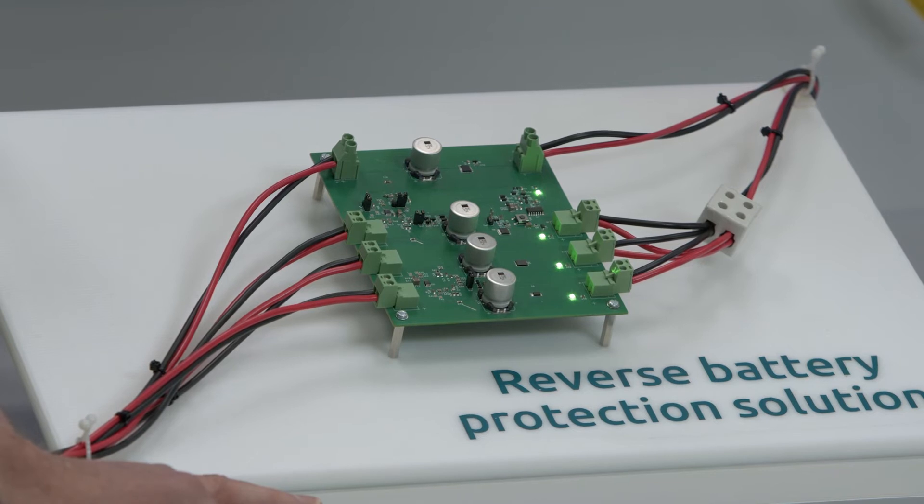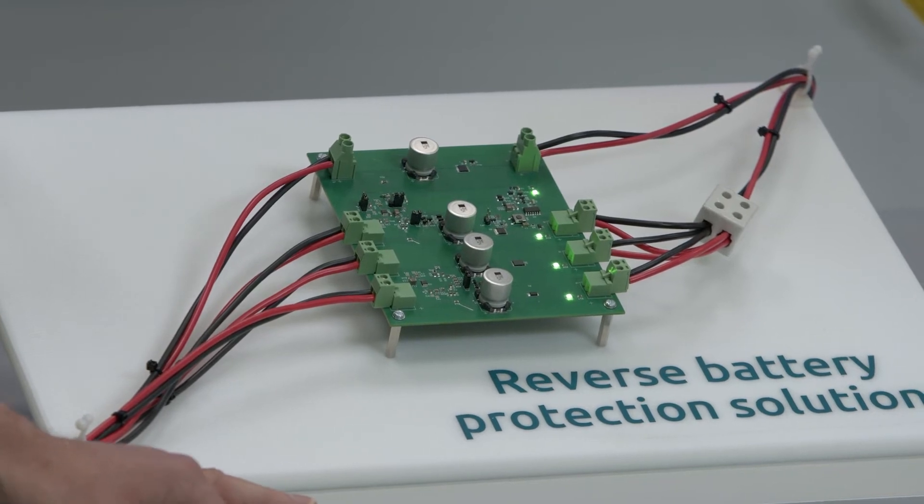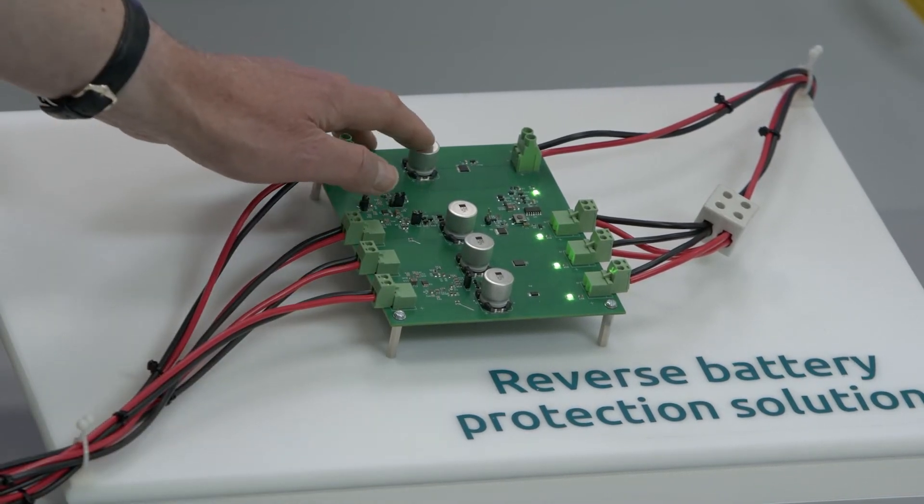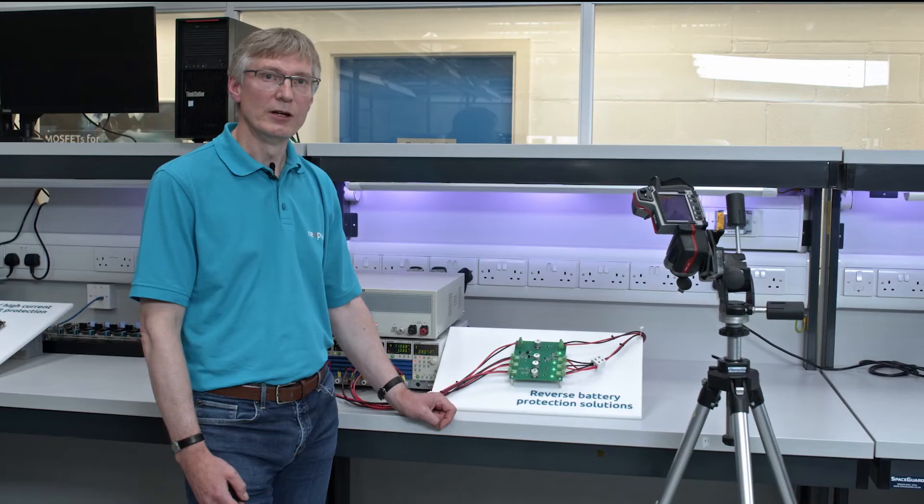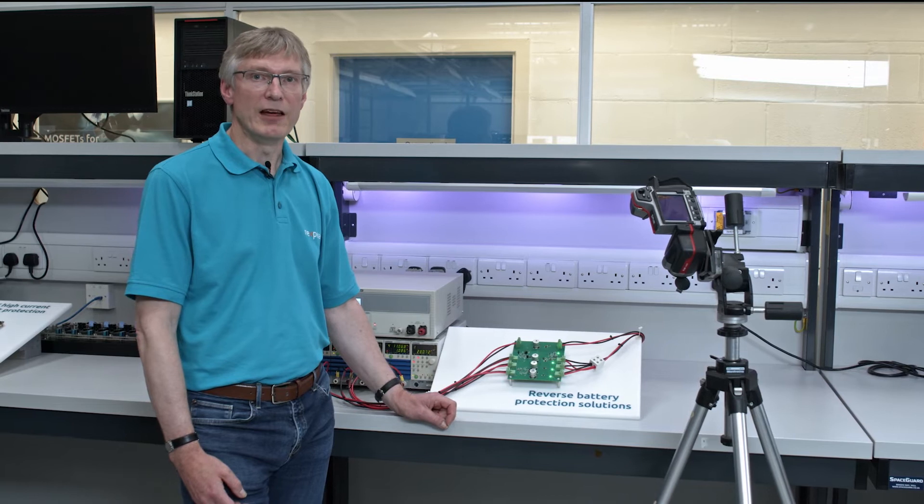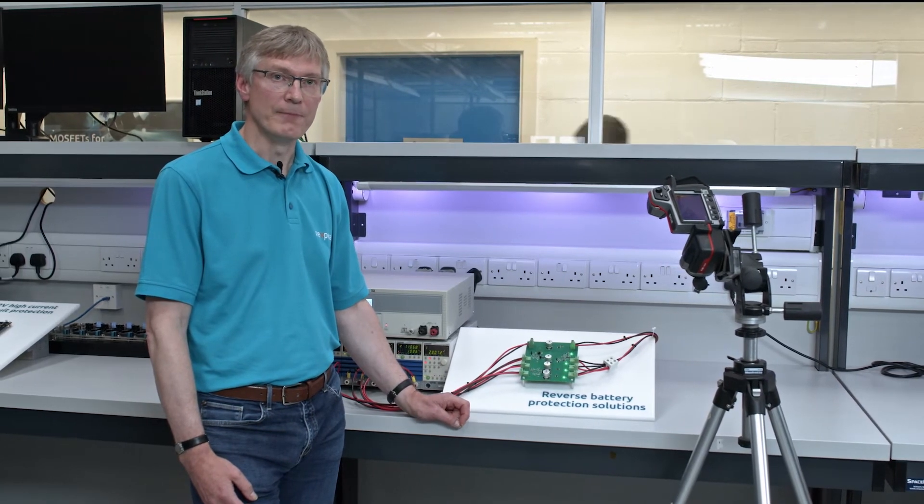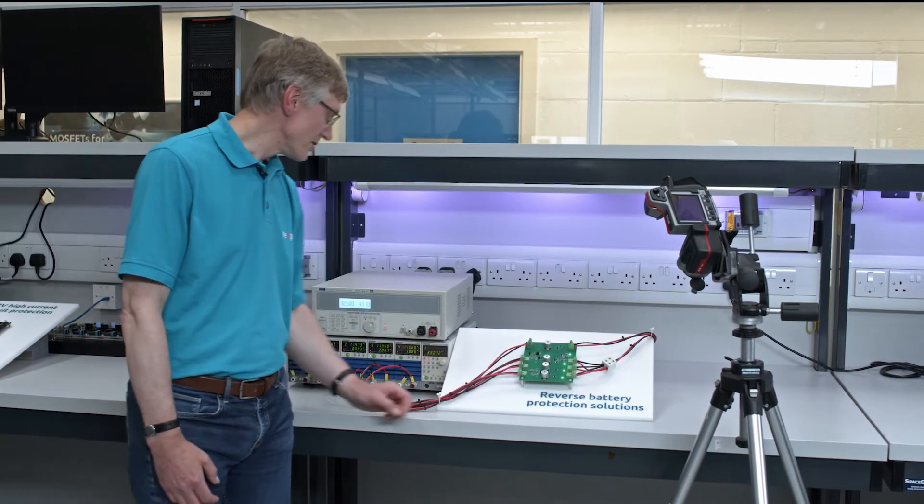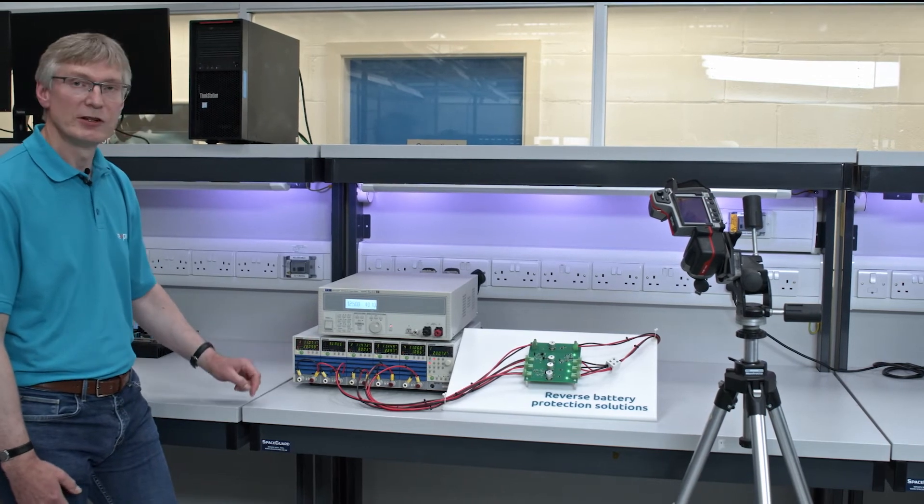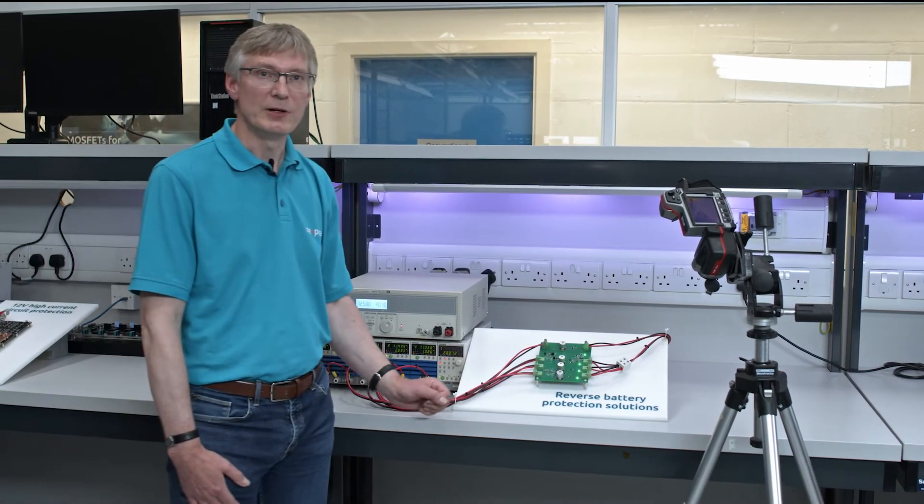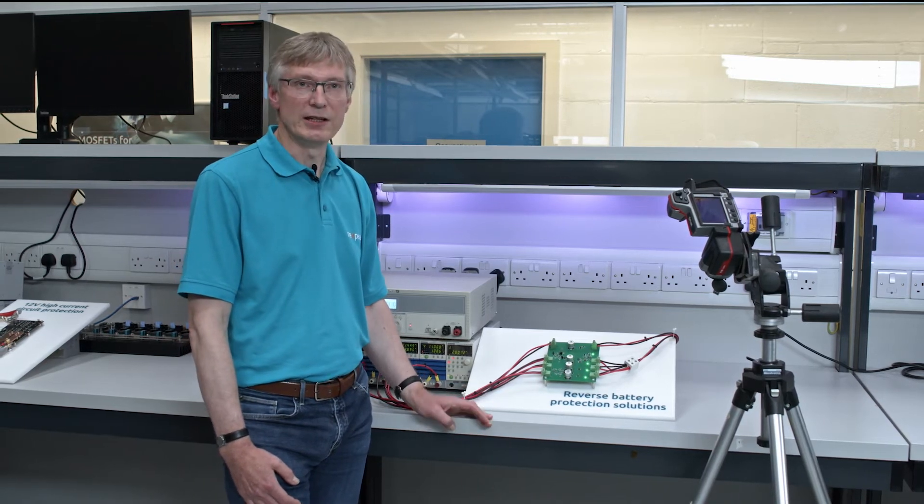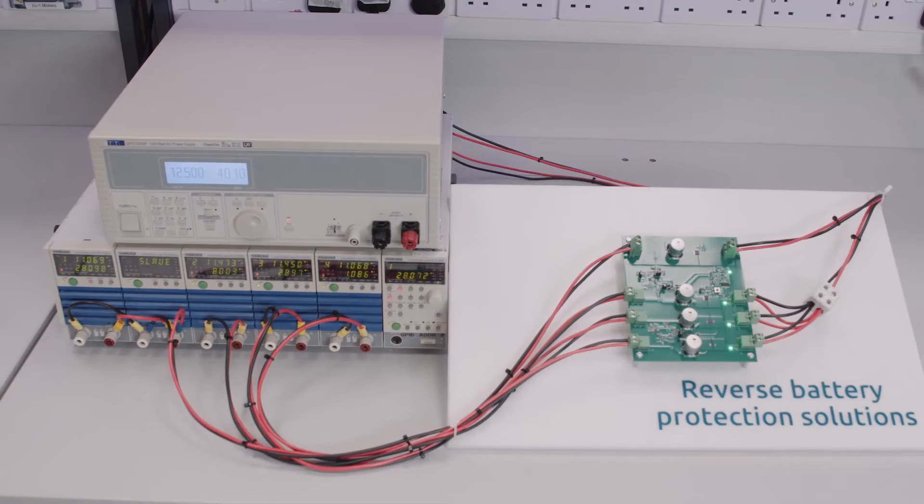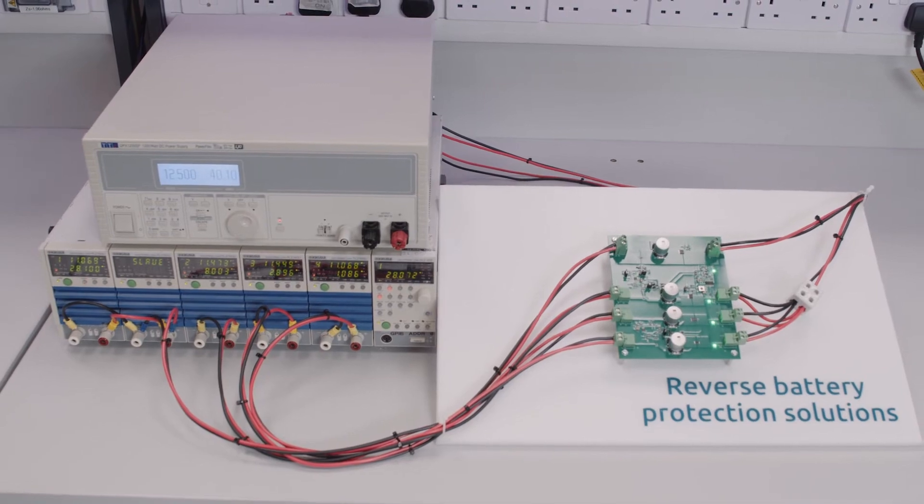The fourth and final type is an N channel MOSFET. Again this is a 40 volt rated device. It has a 1 milliohm RDS on and it's in an LFPAC56 package. In this case it's conducting 28 amps, so significantly higher than in the P channel case. However the penalty for using the N channel device is you need a more complex and costly gate driver.